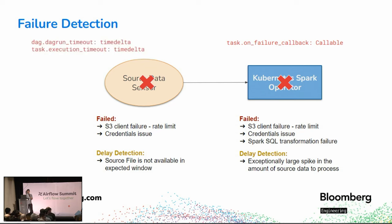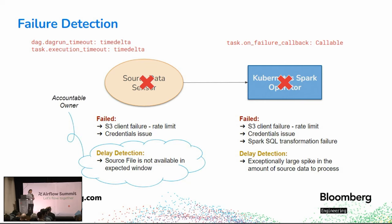There is a concept of timeout in Airflow, defined either at the DAG run or task level, which sets an upper bound on how long a task instance can live. When this is breached, the task instance is killed by force, which invokes a failure callback. But in many cases when we want to detect delays, we simply want to execute some callback and alert an accountable owner while leaving the task alive — giving it a chance at succeeding rather than forcing it to fail and potentially pausing the entire DAG.